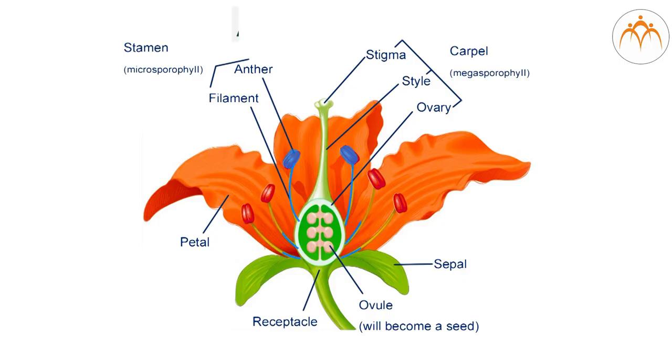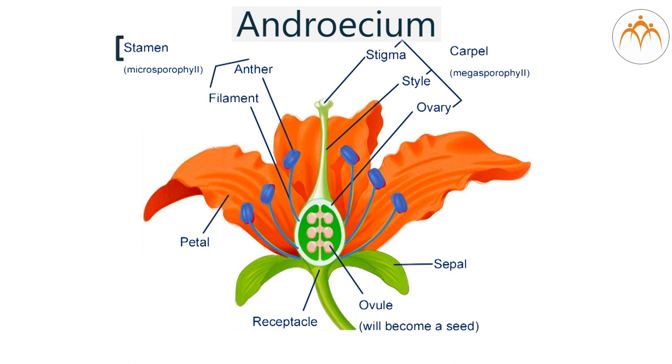On the inner side of petals, the part present is androsium. This is the male reproductive part of flower. It is made up of stamens. Each stamen has bag-like anthers and a stalk called filament.